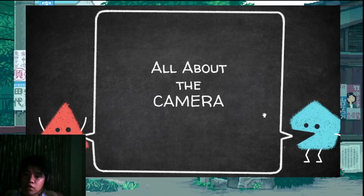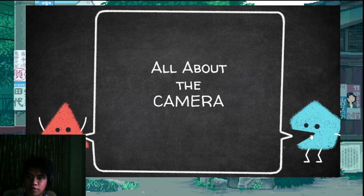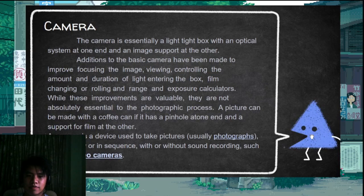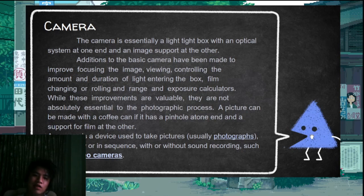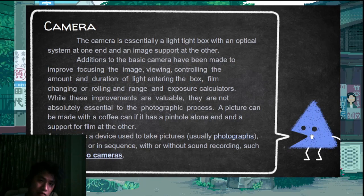Hello, welcome back. This will be the segment all about the camera — the types, parts, and graphic components. So let's get into it. So, what is a camera? It's a light box with an optical system at one end and image support at the other. It records through light with the use of lenses, film, and a box — that's a camera.